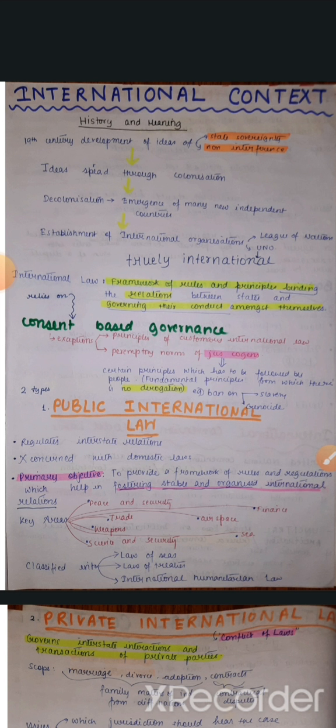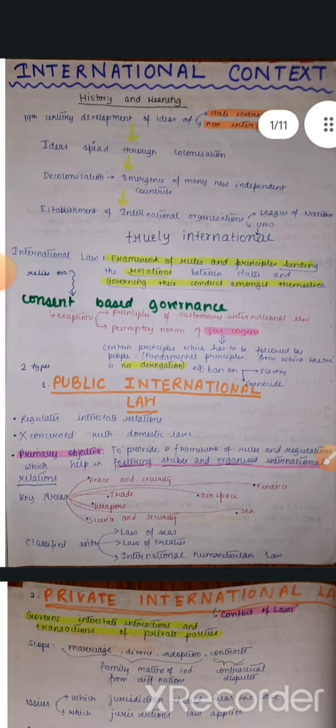But there are two exceptions to this. First of all, principles of customary international law and peremptory norms — just cogens. Customary international law means law that is derived from customs — customs kuch aise practices hain jo ki hum bahot zyada follow karte hain. We will learn more about customary international law ahead.